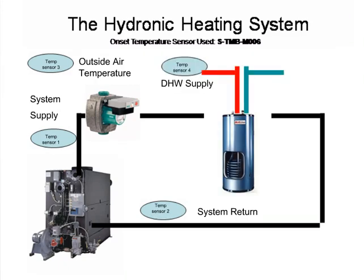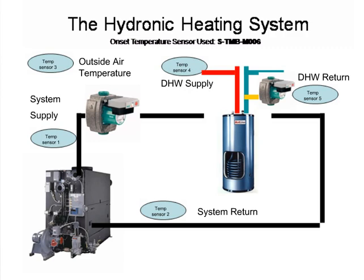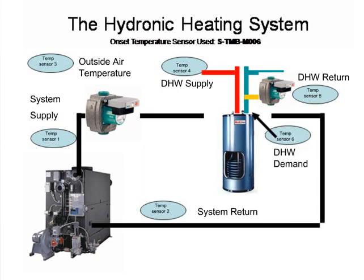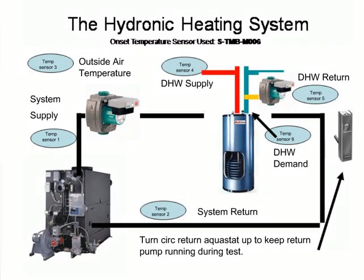We also need to monitor domestic hot water heating system demand. The domestic hot water supply sensor will indicate any shortages occurring during peak demand periods. We also monitor the circulation return to see the differential the domestic hot water system sees during non-demand periods, or standby losses. An additional sensor can be placed to watch real-time domestic hot water demands to see if they fall within a normal load profile. If the circulation return pump is normally controlled by an aquastat, it is necessary to turn the aquastat up to keep the pump running constantly during this test. Once the test is done, remember to return the aquastat back to its normal setting.